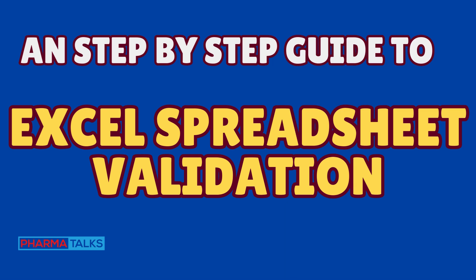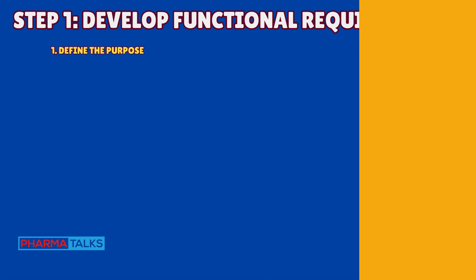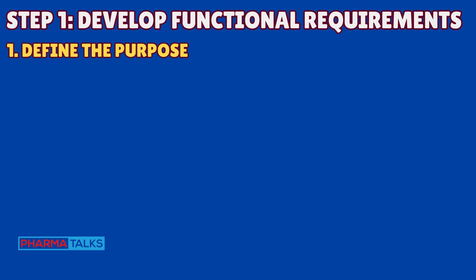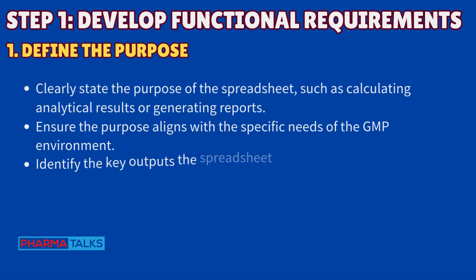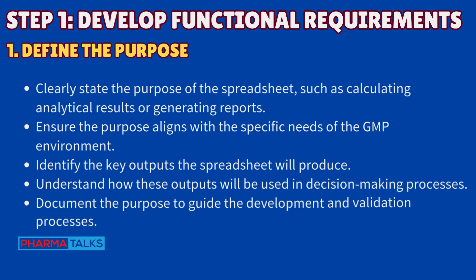A step-by-step guide to Excel spreadsheet validation. Step 1: Develop functional requirements. Define the purpose — clearly state the purpose of the spreadsheet, such as calculating analytical results or generating reports. Ensure the purpose aligns with the specific needs of the GMP environment. Identify the key outputs the spreadsheet will produce and understand how these outputs will be used in decision-making processes. Document the purpose to guide the development and validation processes.